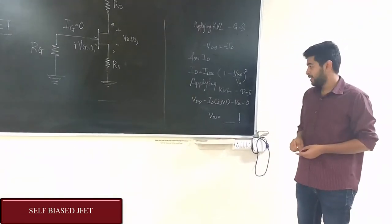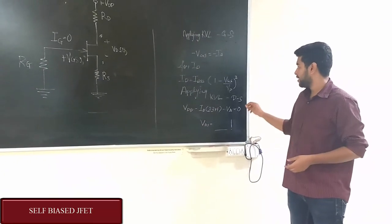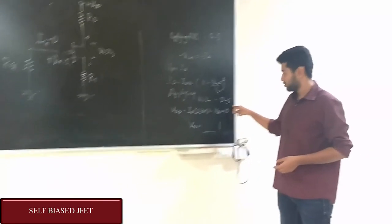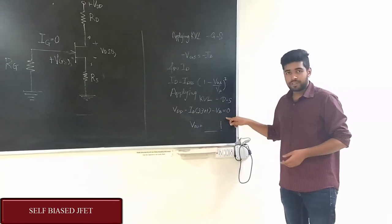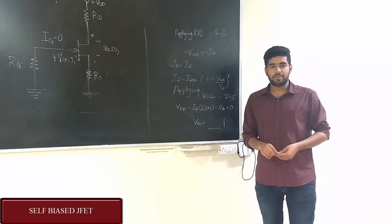In order to get the value of VDS, KVL is applied from drain to source. We get this equation and from this VDS is calculated. That's all, let us implement on the breadboard.